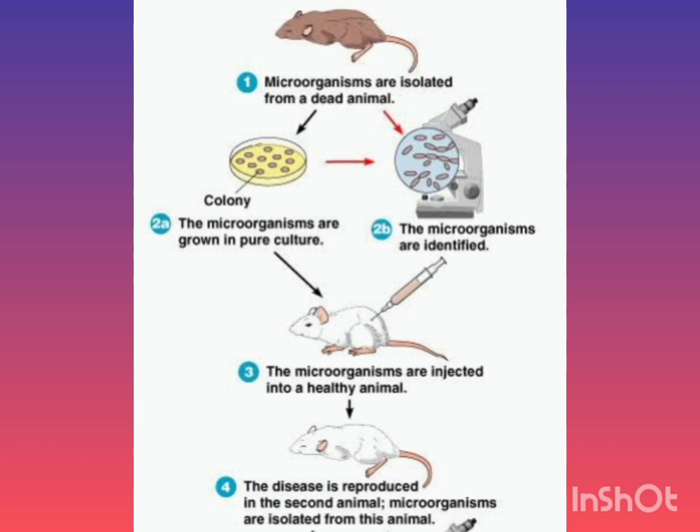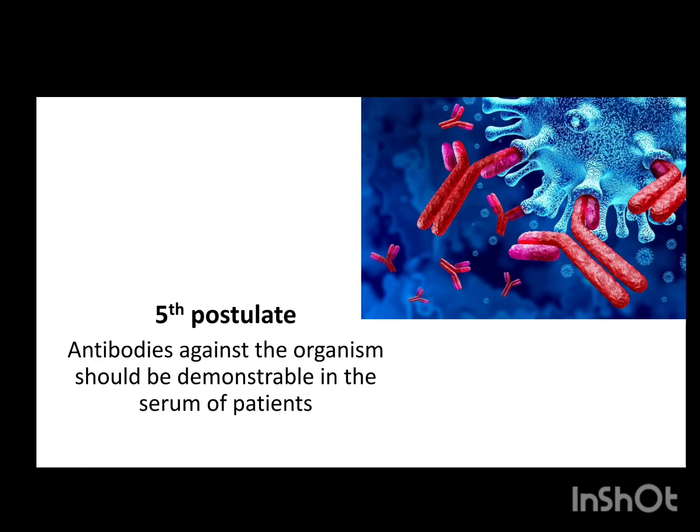The third postulate states that the inoculation of a sample of the culture into a healthy susceptible animal must produce the same disease. The fourth postulate states that the disease organism must be recovered in culture from the inoculated animal, that is, the second host.